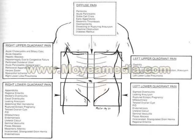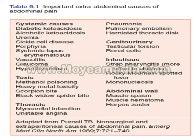Regarding extraabdominal causes of abdominal pain: systemic causes like diabetic ketoacidosis, uremia, sickle cell disease, systemic neurofibromatosis, vasculitis, and others; toxic causes; stress causes like myocardial infarction or unstable angina; pneumonia or pulmonary embolism; genitourinary causes like renal colic; infectious causes; or abdominal wall causes like muscle spasm, muscle hematoma, or herpes zoster.